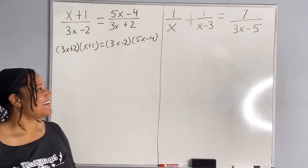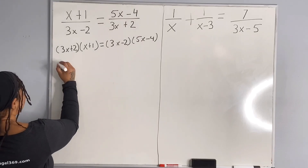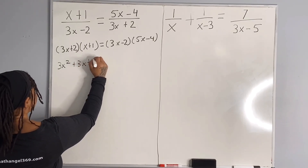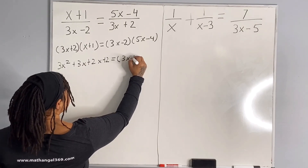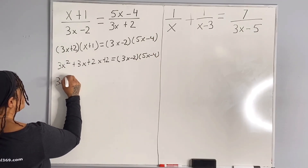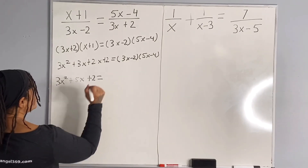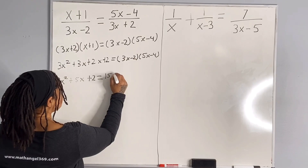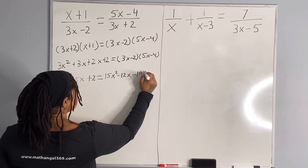Now we got rid of our fractions, so let us use FOIL to simplify everything. We have 3x squared plus 3x plus 2x plus 2 is equal to — I am just going to leave the right side as is. So we have 3x squared plus 5x plus 2 is equal to 15x squared minus 12x minus 10x plus 8.